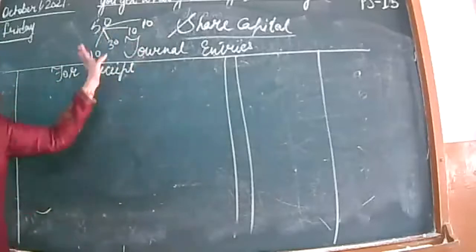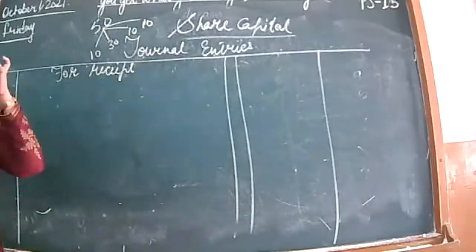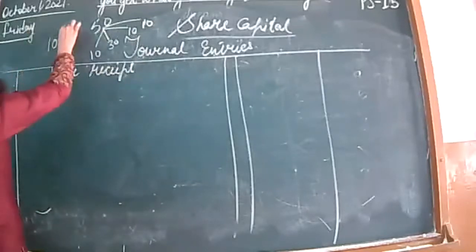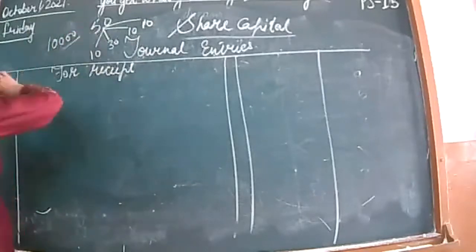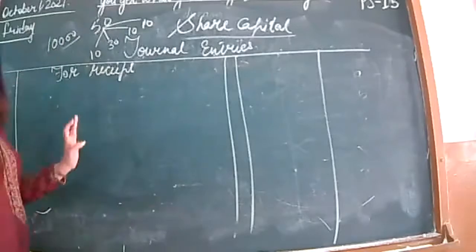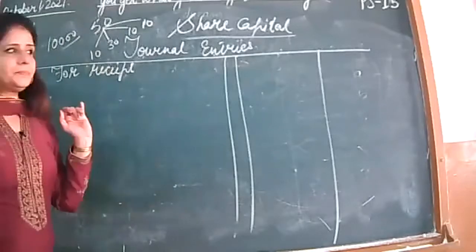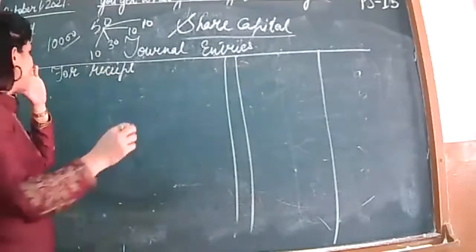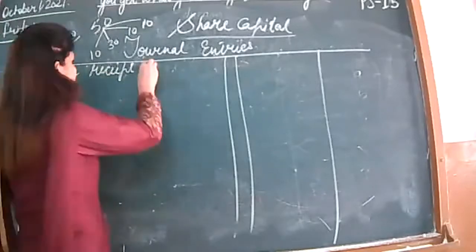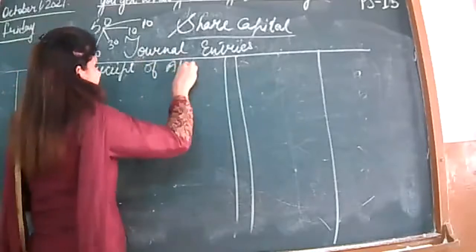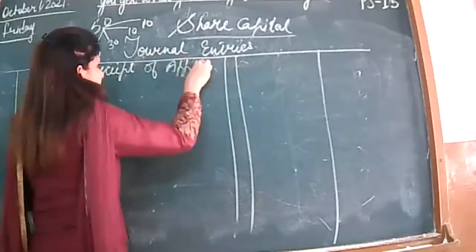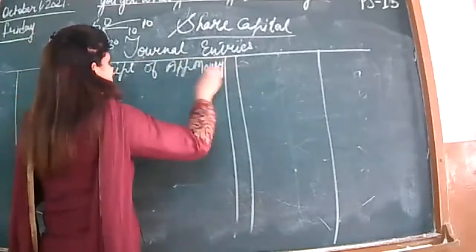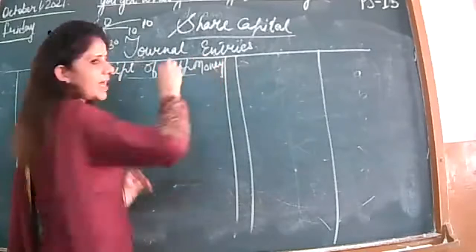I will tell you the amount to calculate this entry. For example, shares are 10,000. The first entry will always be for the receipt of application money.